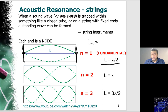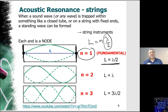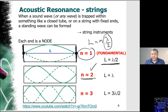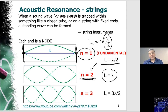For the closed-closed resonator, we have L equals N times lambda over 2. The fundamental frequency when N equals 1 gives L equals lambda over 2. This is the smallest frequency for a closed-closed end resonator. As we increase the value of N, we reach higher harmonics. At N equals 2, we have L equals 2 times lambda over 2, which is L equals lambda. When we have the full wavelength, we have the second harmonic.